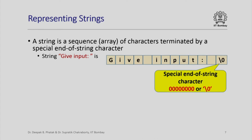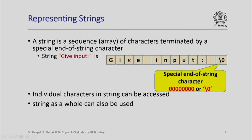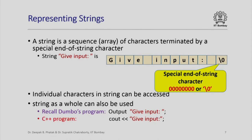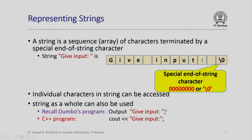We also represent the end-of-string character using backslash 0 in programming. Individual characters in a string can be accessed — for example, the third character — or the string can be used as a whole. In a Dumbo program we had instructions like 'output a message string: give input colon.' The corresponding C++ statement would use cout with the redirection operator followed by the string, feeding it as a stream of bytes.